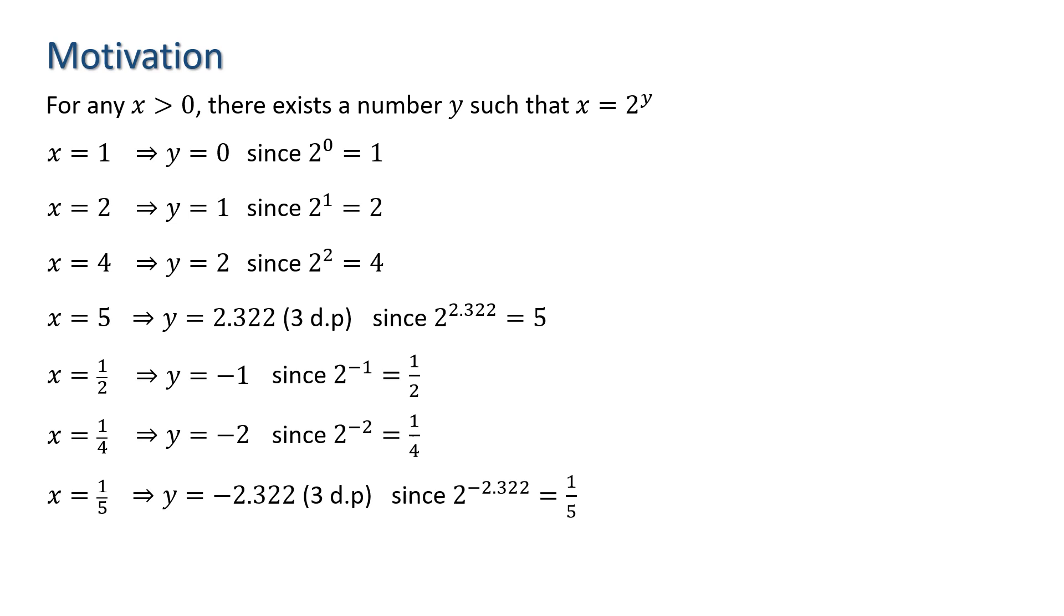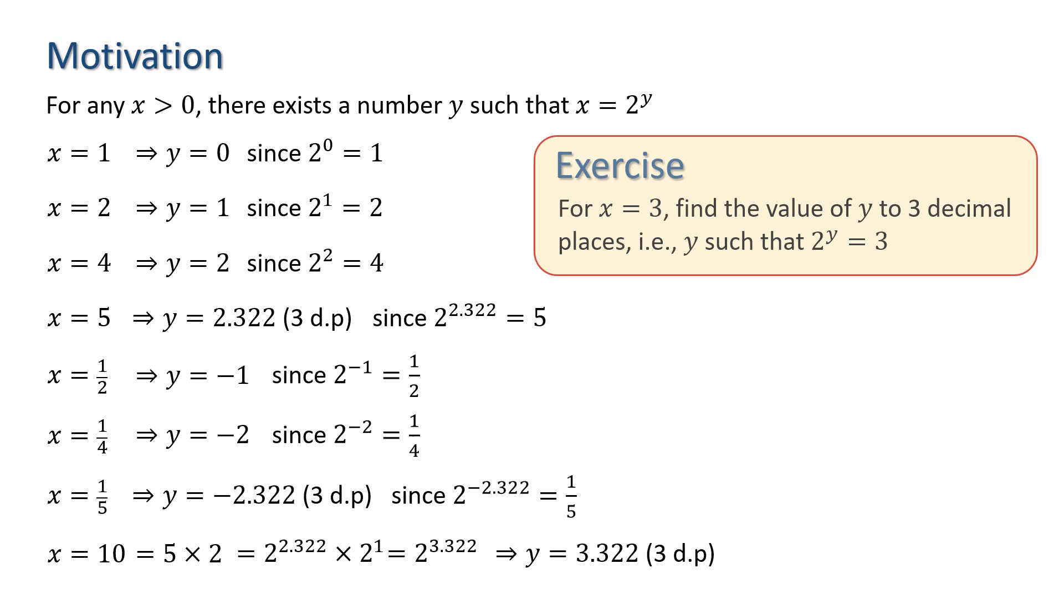We can also generate further values of y using values we've already found combined with the rules of indices. So, for example, for x equals 10, we know that 10 is 5 times 2 and we know that 5 is 2 to the 2.322. So, we have 2 to the 2.322 times 2 to the 1. Adding the indices gives 2 to the power of 3.322. Thus, y equals 3.322 for x equals 10.